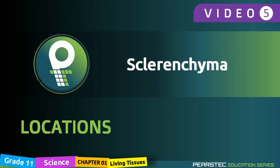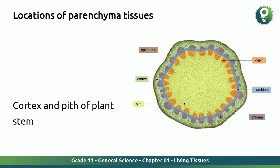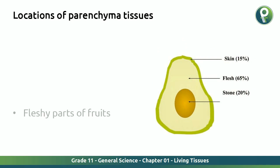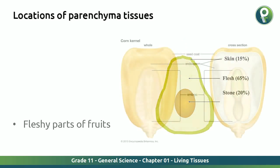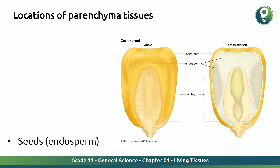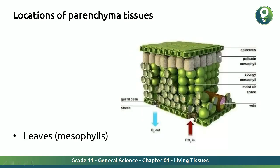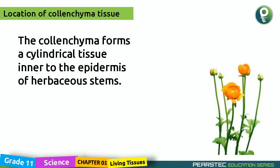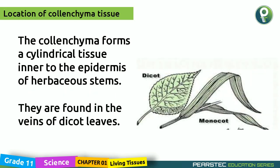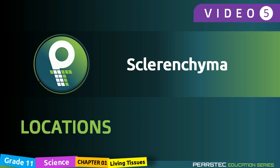Now let's understand the location of Sclerenchyma. As a recap: Parenchyma tissue is found in the cortex and pith of the plant stem, pith and cortex of roots, fleshy parts of fruits, seed endosperms, and the mesophyll of leaves. Collenchyma tissue forms a cylindrical tissue inner to the epidermis of herbaceous stems and is found in the veins of dicot leaves.